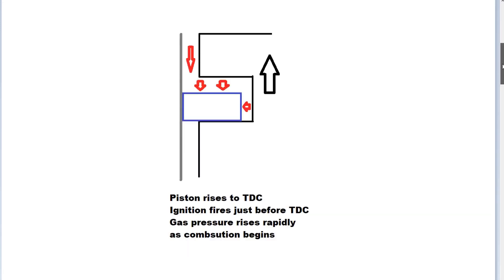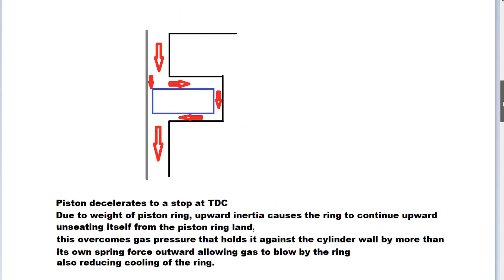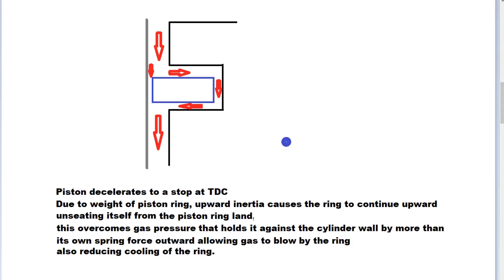But when we get to very high RPM, what can happen is that once the piston stops or decelerates to a stop, due to the weight of the piston ring itself, if we've got a very large and heavy piston ring, the piston ring can actually jump up off the land. In other words, our piston stops but our piston ring keeps moving.